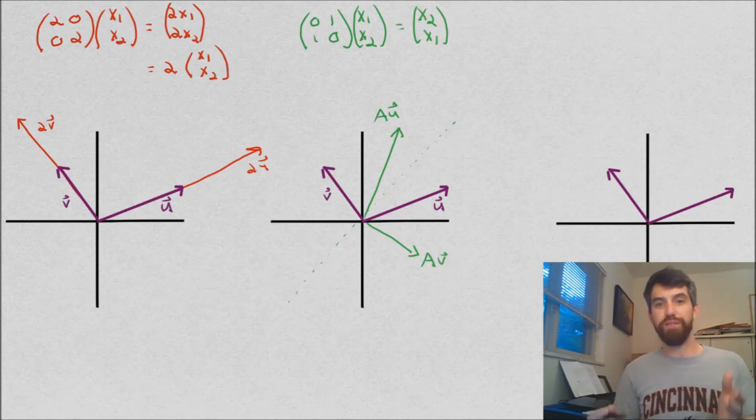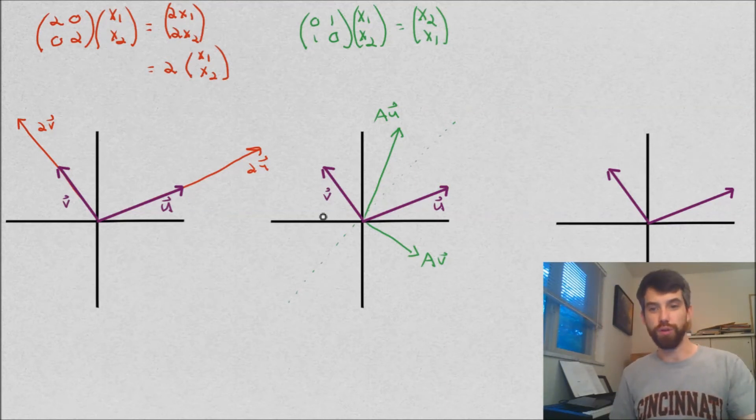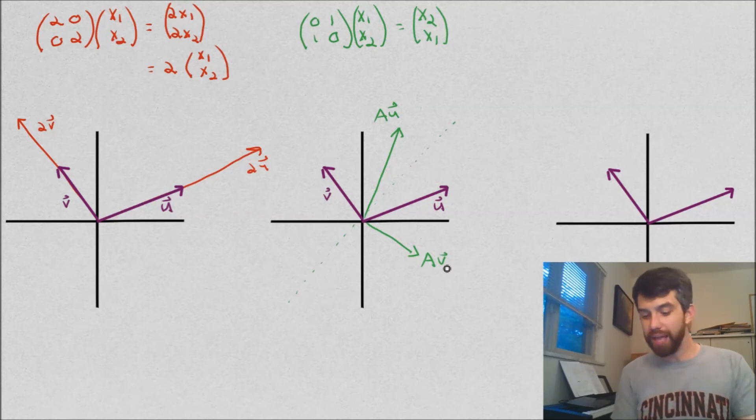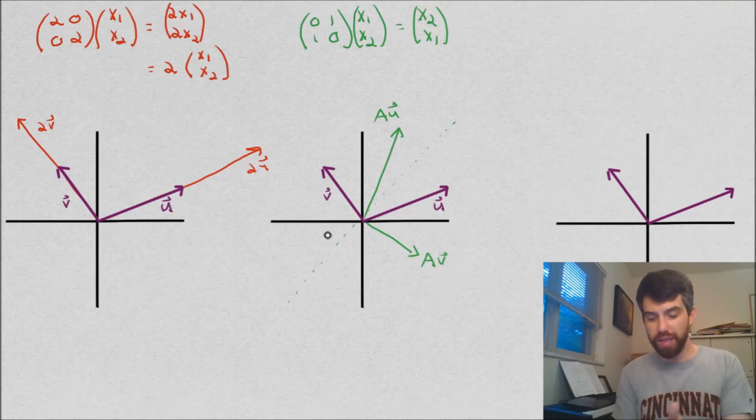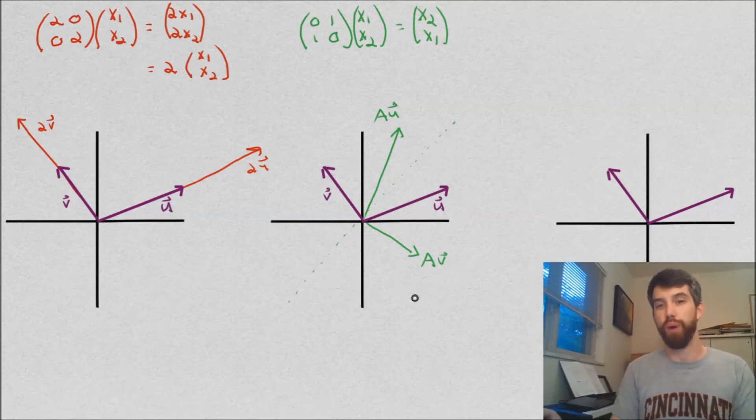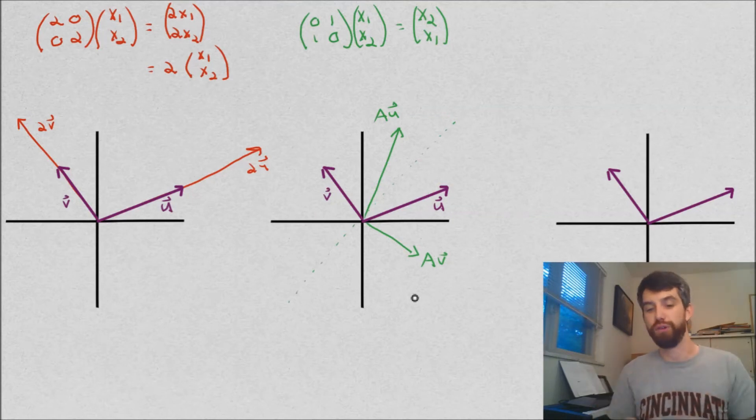And maybe just to verify that this makes sense, if I think of my v, that has a negative horizontal component. And then if I look at my Av, it has a negative vertical component. And if I look at my v, it's got a positive vertical component. And then if I look at my Av, it's got a positive horizontal component. So basically, multiplying by the A just completely reverses the role of what was a horizontal component and what was a vertical component.